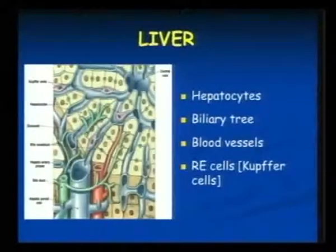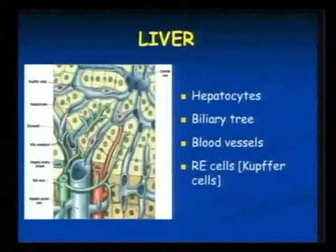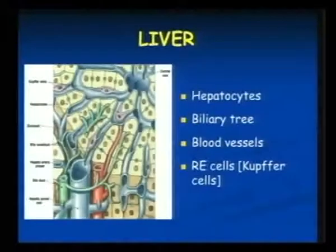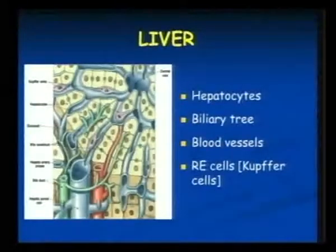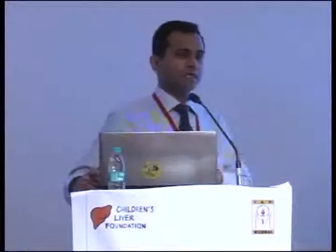The most specific to the liver are only hepatocytes and biliary tree. The remaining two — blood vessels and RE cells — are shared by the whole system, multiple systems: your spleen, heart, everywhere.